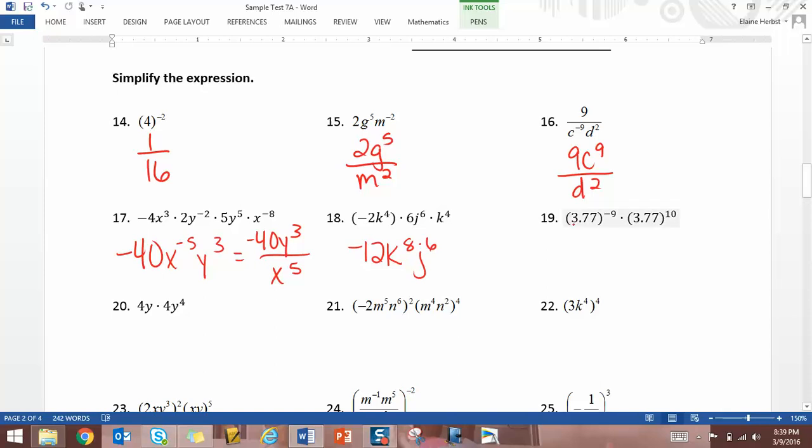On 19, again, these are bases. 3.77 is the base here. So you add the exponents. So you just get 3.77 to the first. Or 3.77.